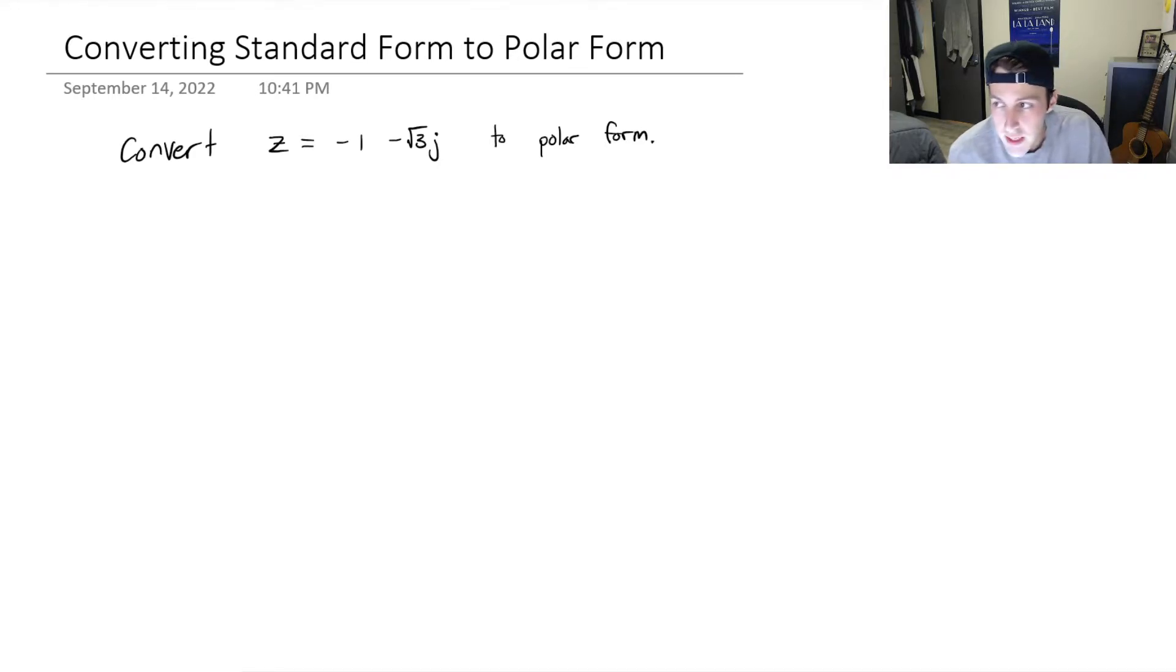In this video, we're going to be taking a look at some examples of converting a standard form of a complex number to the polar form. Remember that when we're converting to polar form, we need two things to describe the complex number: the modulus of the complex number, so the length of that vector from the origin, as well as the argument or the theta, the angle that that vector makes with the positive direction of the real axis.